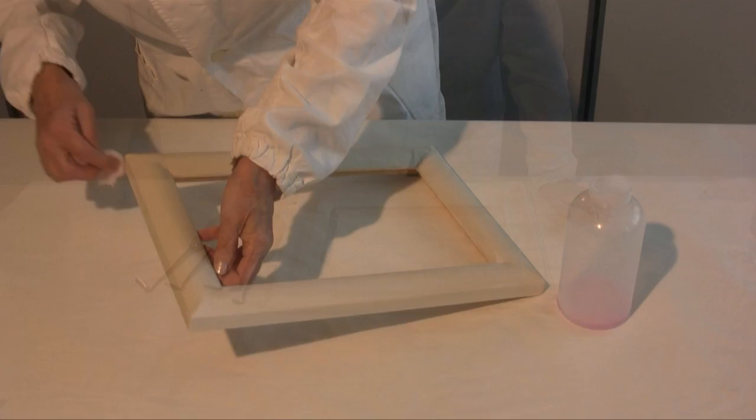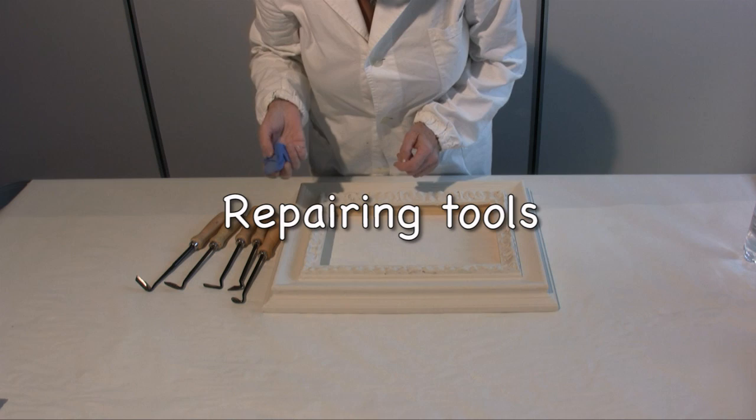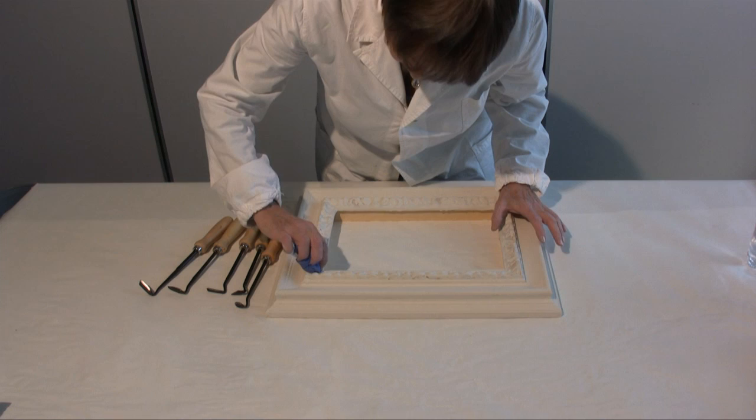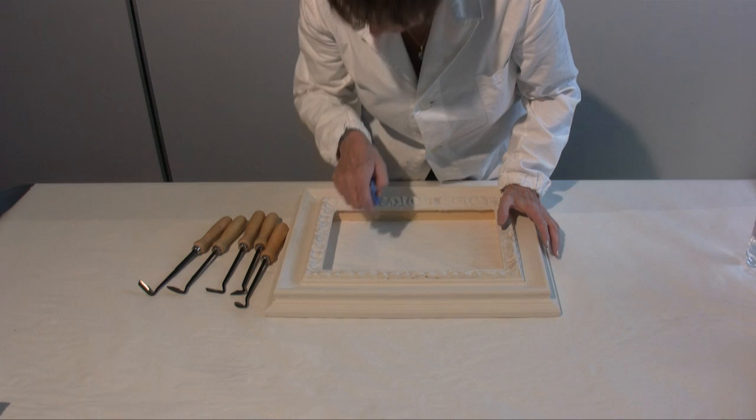The application of the plaster on a frame with an embossed design could make the shapes a bit rounder and therefore lose some of the decoration details. In particular, the parts that are hollow could have filled up with too much plaster. In this case, a reparation work has to be taken into consideration.